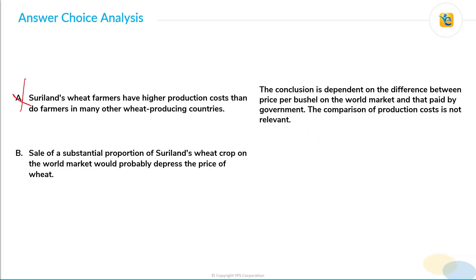Coming to choice B: sales of a substantial proportion of Suriland's wheat crop on the world market would probably depress the price of wheat. This choice is in line with our pre-thought weakener, and this is the correct answer choice here.